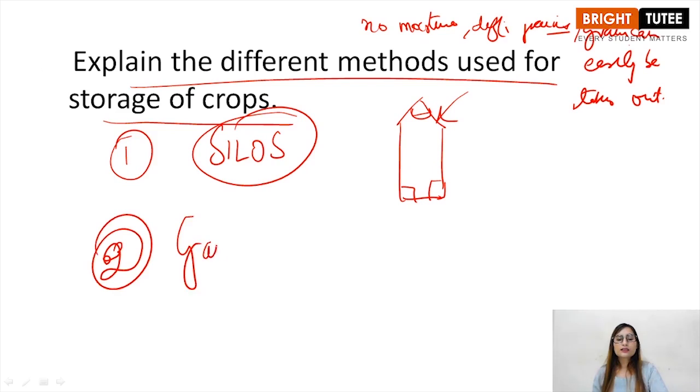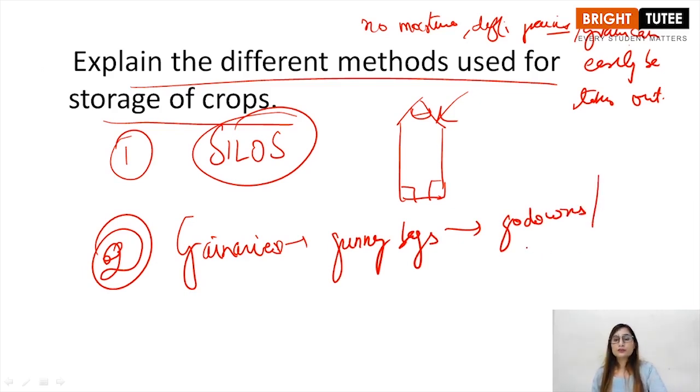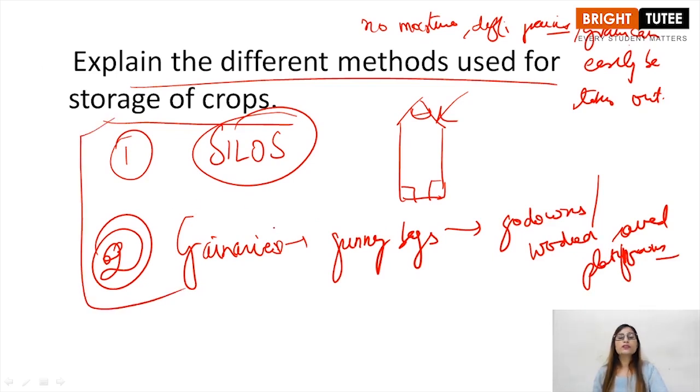Second are granaries, in which the grains are stored in gunny bags and these gunny bags are then kept in godowns or wooden raved platforms away from water and alleys for fumigation. So these are the two methods for storage of crops. You have to explain them in detail. It is a three mark question, 1.5 marks for each. Watch the lecture for more detail.